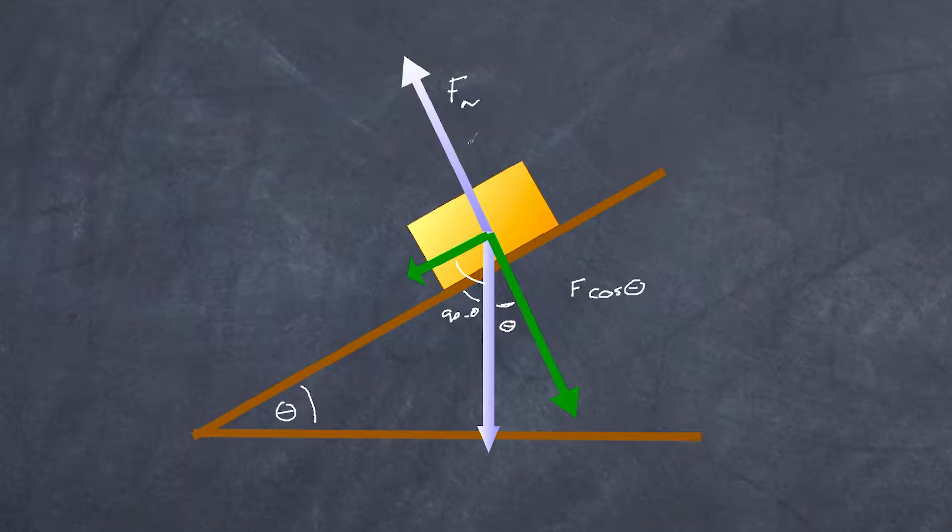Now that F of course is equal to the normal force that's the force here of the block acting on the plane and the plane of course is pushing back up onto the block in the opposite direction. So that is also equal to F cosine theta. Now what is F? Now F of course is the weight of the object so it becomes Mg cosine theta.